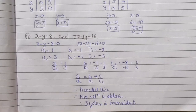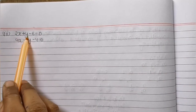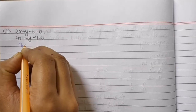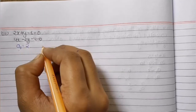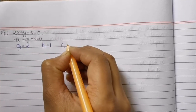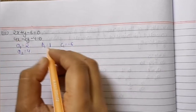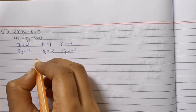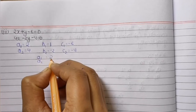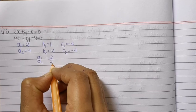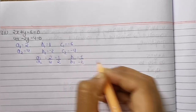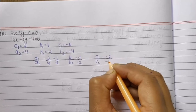Since the system is inconsistent, we get no solution. Moving to the third part: 2x plus y minus 6 equals to 0 and 4x minus 2y minus 4 equals to 0. So a1 equals 2, b1 equals 1, c1 equals minus 6, a2 equals 4, b2 equals minus 2. a1/a2 equals 2/4 which is 1/2, and b1/b2 equals 1 by minus 2.